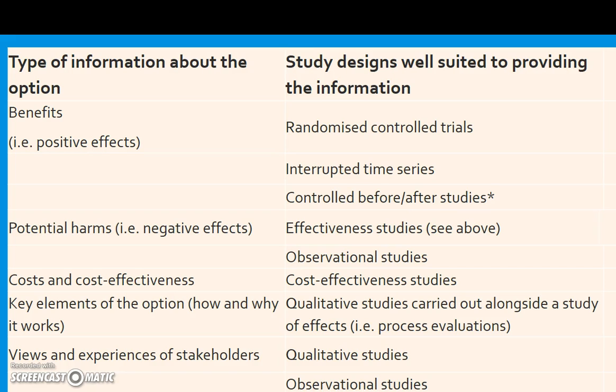Some of these are more familiar than others. For example, benefits or positive effects — effectiveness — could be established through randomized controlled trial studies. And if they're not available, through interrupted time series or controlled before-and-after studies.